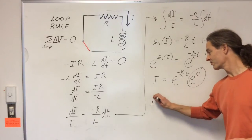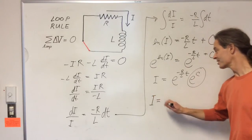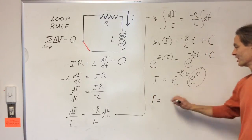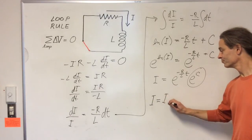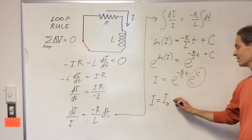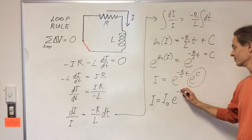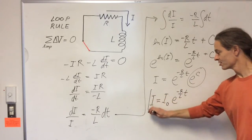And we can write our result as follows. The current at any time is equal to the current at time zero times this decaying exponential factor. And that's our result.